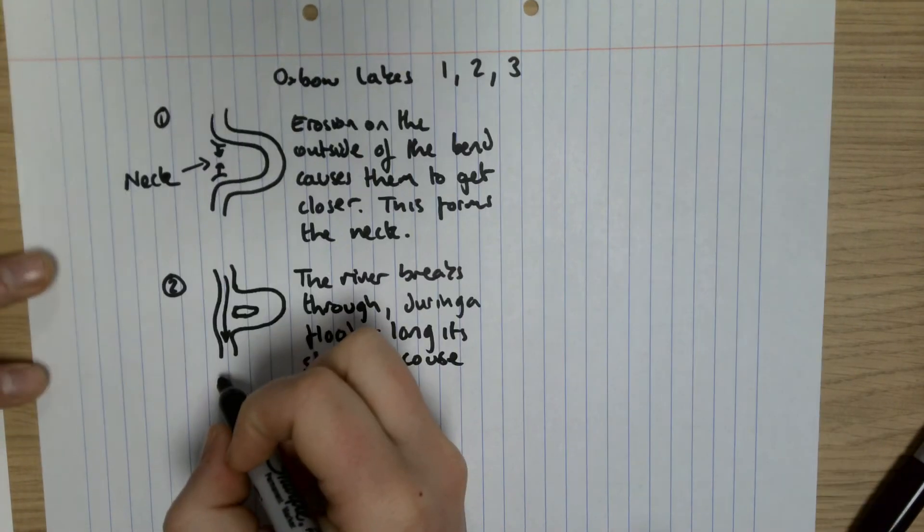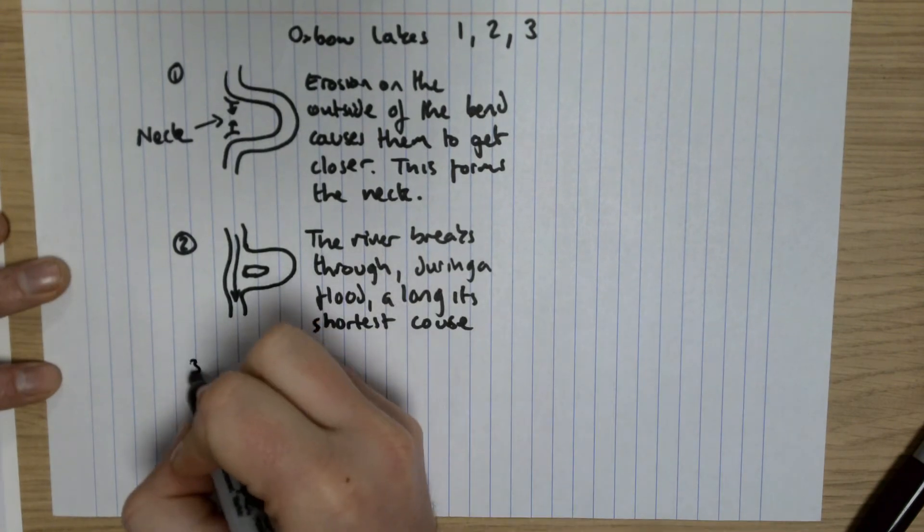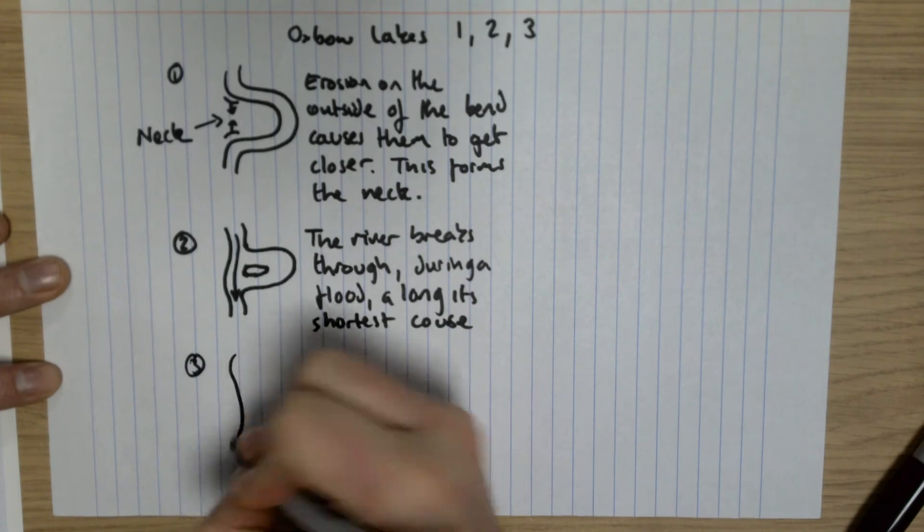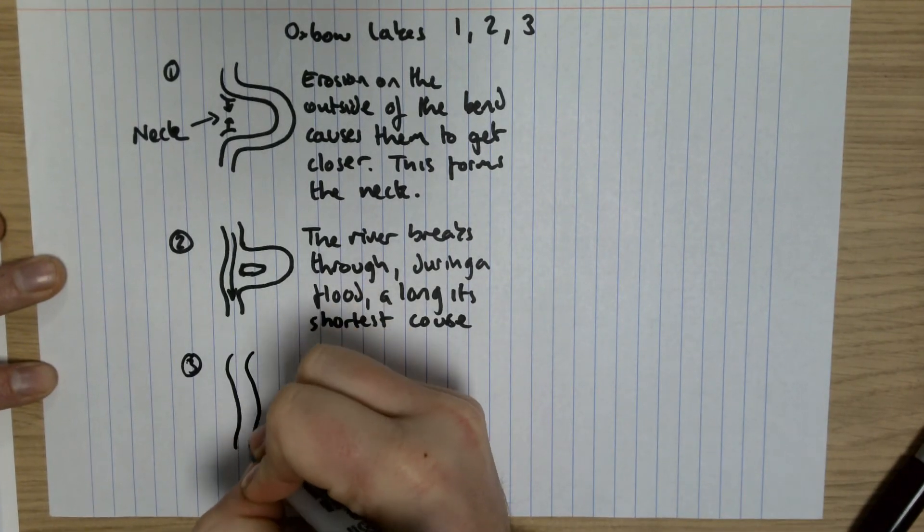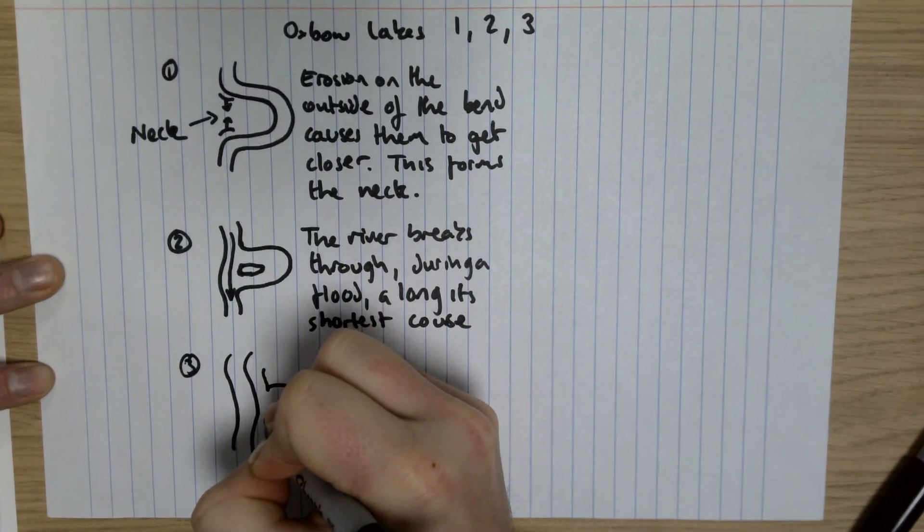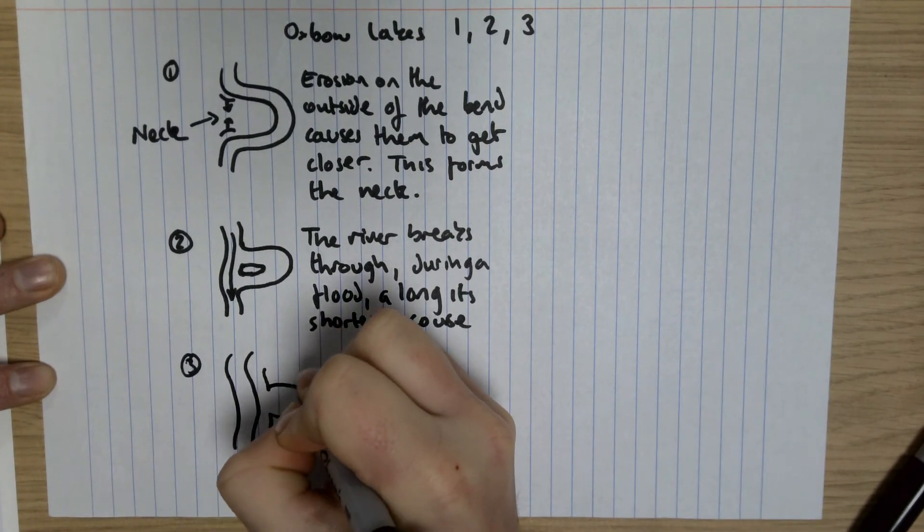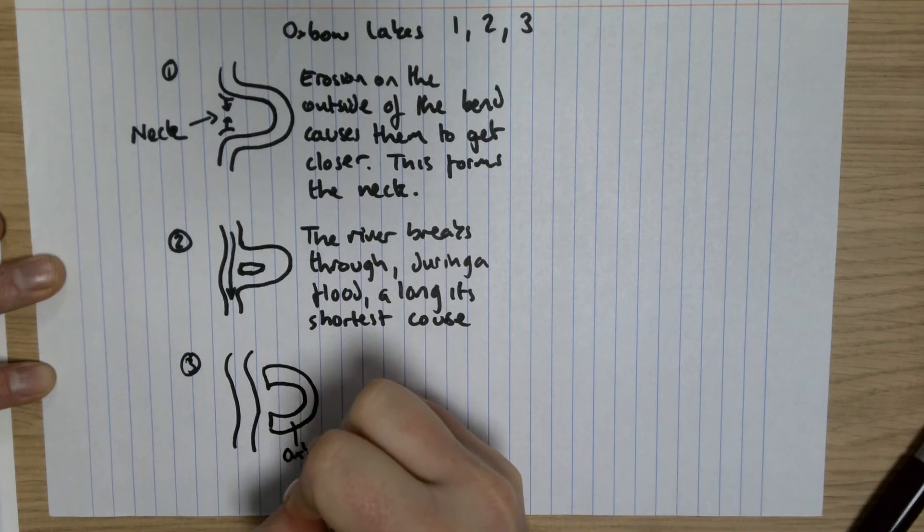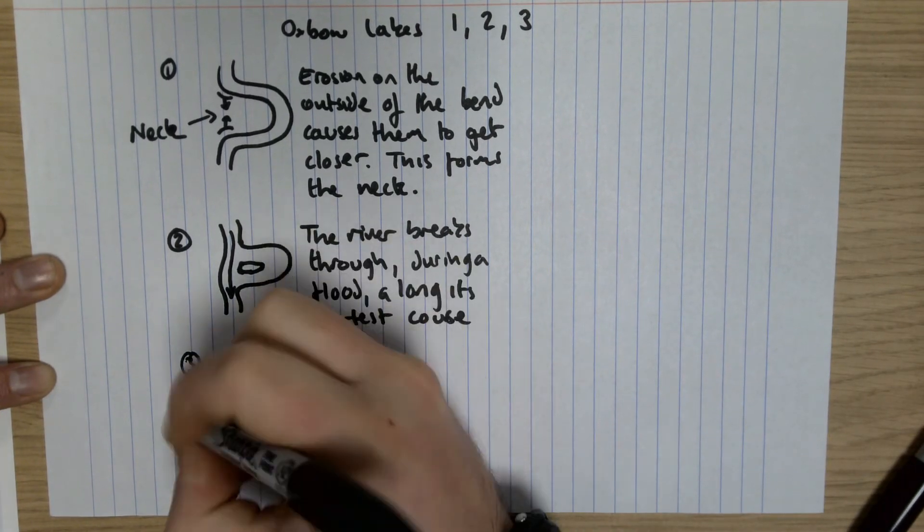So the next thing, the final thing that happens - one, two, three - is this: we now have depositional processes taking place and our lake is formed, our oxbow. So that's our oxbow, and this is the new path of the river.